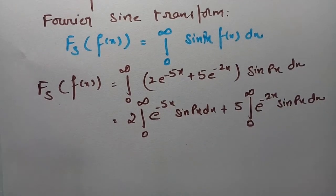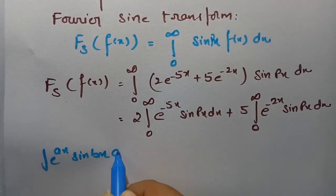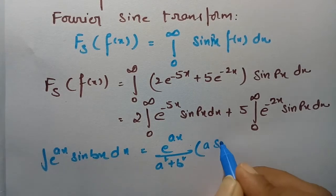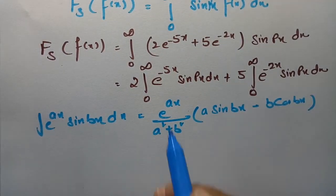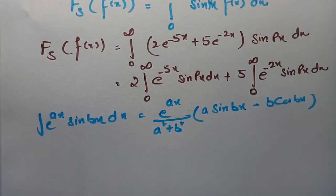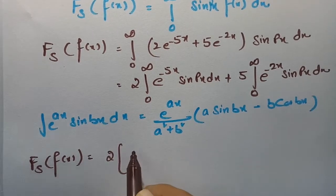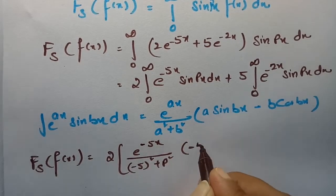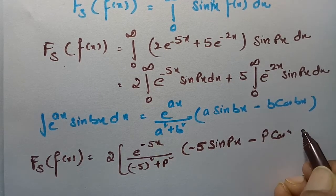We split this into 2 times integral 0 to infinity of e power minus 5x into sin px dx, plus 5 times integral 0 to infinity of e power minus 2x into sin px dx. We have the formula: integral of e power minus ax into sin bx dx equals e power minus ax divided by a squared plus b squared, times a sin bx minus b cos bx. Here for the first term a is minus 5, b is p; and for the second term a is minus 2, b is p.